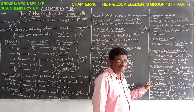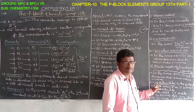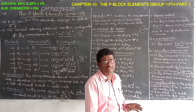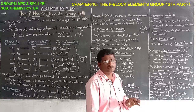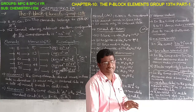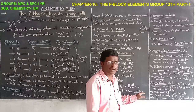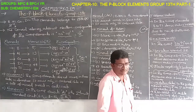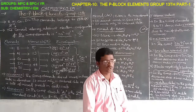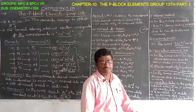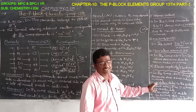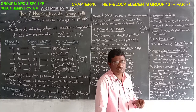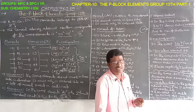What is inert pair effect? Non-participation of NS² electrons in the chemical bond is called the inert pair effect. In 13th group elements, boron and aluminium exhibit +3 oxidation state; gallium and indium exhibit +1 and +3; thallium exhibits only +1. Top to bottom in any group, +3 oxidation stability decreases and +1 stability increases due to the inert pair effect.